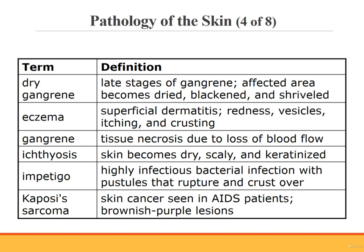Eczema is a superficial dermatitis characterized by redness, vesicles, itching, and crusting. Gangrene is tissue necrosis, usually due to deficient blood flow. Ichthyosis is a condition in which the skin becomes dry and scaly. Impetigo is a highly infectious bacterial infection of the skin — it has pustules that rupture and then crust over. Kaposi's sarcoma is a form of skin cancer frequently seen in AIDS patients; brownish-purple papules spread from the skin to internal organs.